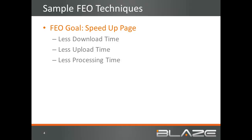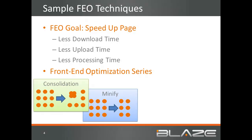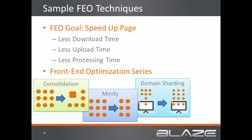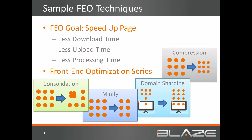The Frontend Optimization series is a constantly updated set of presentations that explain the different ways you can speed up your site. These presentations are meant to help guide developers who plan to implement these techniques, and to help users of automated FEO tools, such as Blaze, understand what happens behind the scenes. Since this is a relatively new field, new techniques come up very frequently and existing ones are updated, so be sure to check in periodically to see what has changed. To learn more, watch the technique-specific presentations on the Blaze website. Thanks for listening.